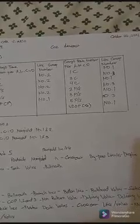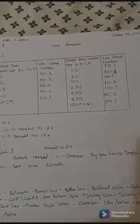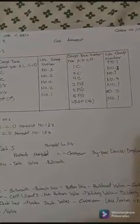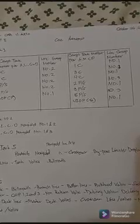So in Task 1, we are given the base on the given storage plan. Check the cargo tank to be loaded for ALCO and AMCO to determine the line group where each tank belongs using MT Crystal A cargo piping diagram. In Task 1, the cargo tanks for ALCO are 2 center and 5 center for ALCO, and 1 port side, 1 starboard side, 4 port side, and 4 starboard side.